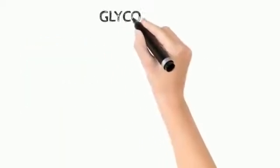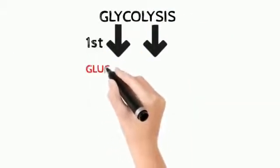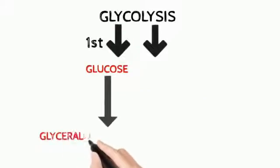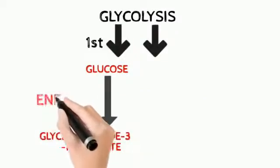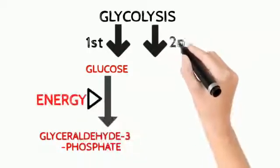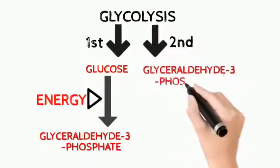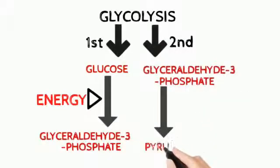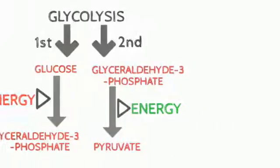The process takes place in two phases. In the first phase, glucose is converted into two molecules of glyceraldehyde-3-phosphate. The first phase actually uses energy instead of making it. In the second phase, glyceraldehyde-3-phosphate is converted into two molecules of pyruvate, and this step produces energy in the form of ATP. It all begins with a molecule of glucose entering the cytosol.